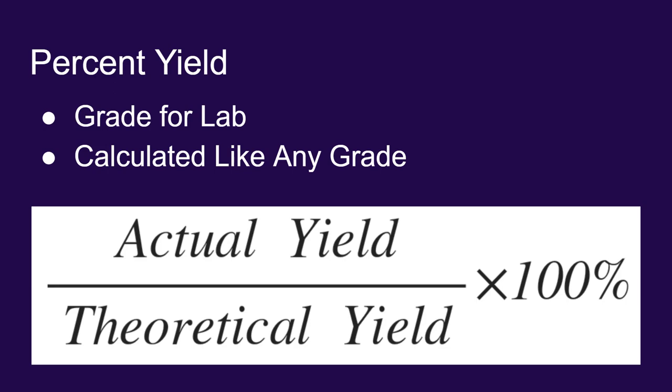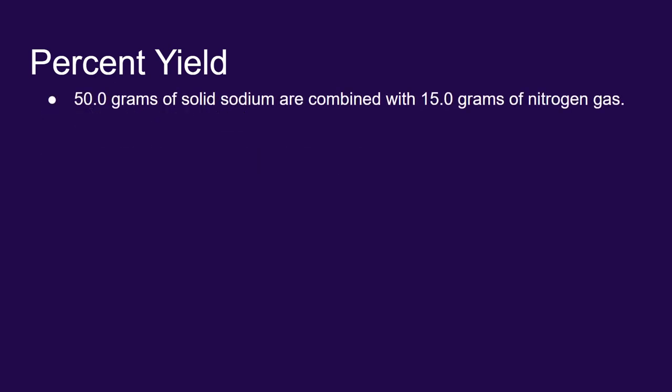If I take 50 grams of sodium and combine it with 15 grams of nitrogen gas, I then go to the lab and collect 57.8 grams of sodium nitride, I would like to know what the percent yield is.